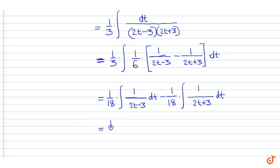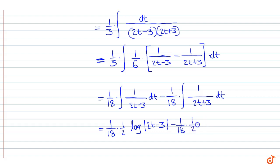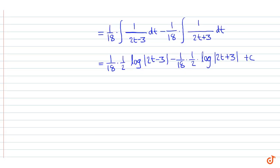This is equal to 1 by 18 into 1 by 2 log |2t minus 3| minus 1 by 18 into 1 by 2 into log |2t plus 3| plus c. This is equal to 1 by 36 log |2t minus 3 divided by 2t plus 3|.